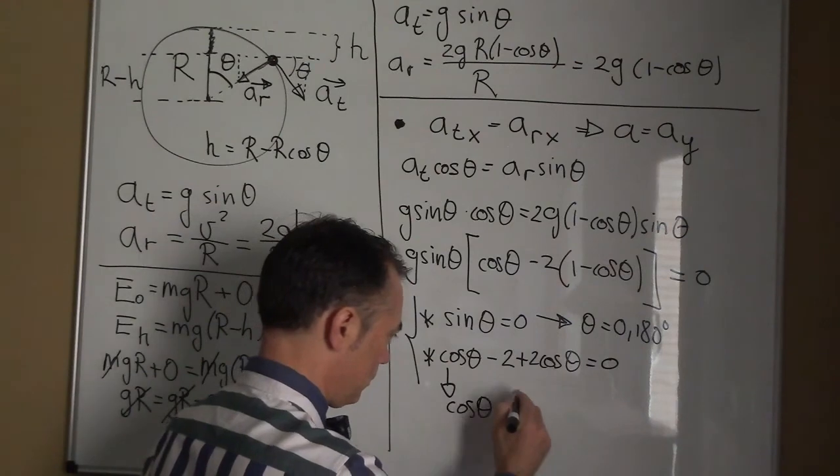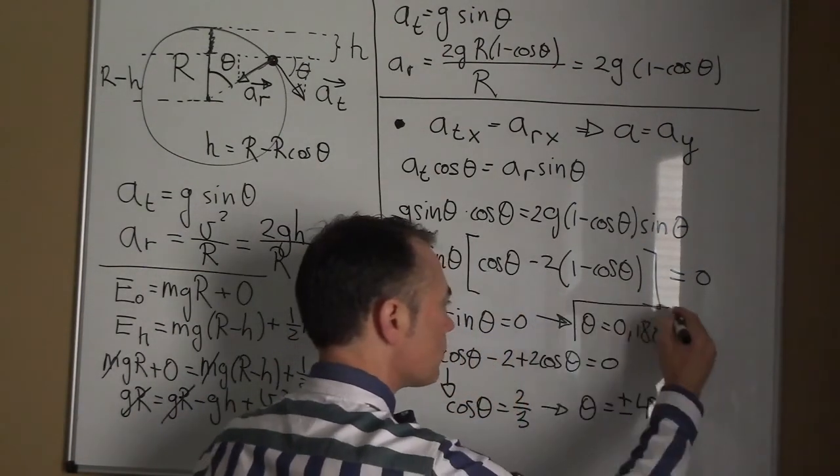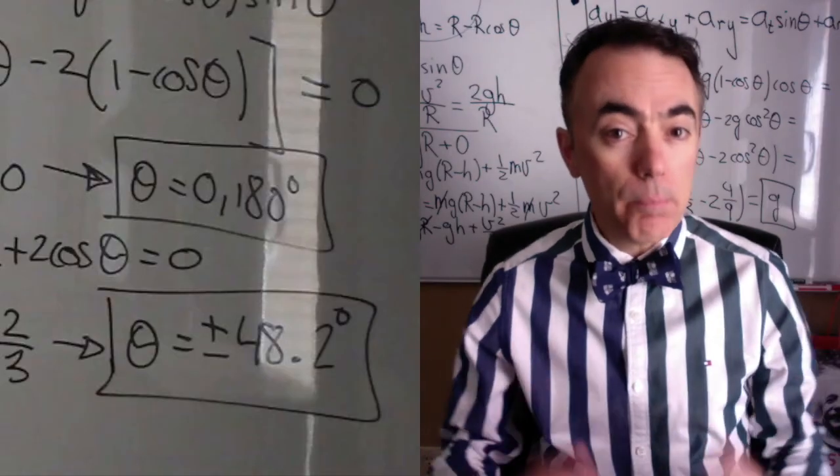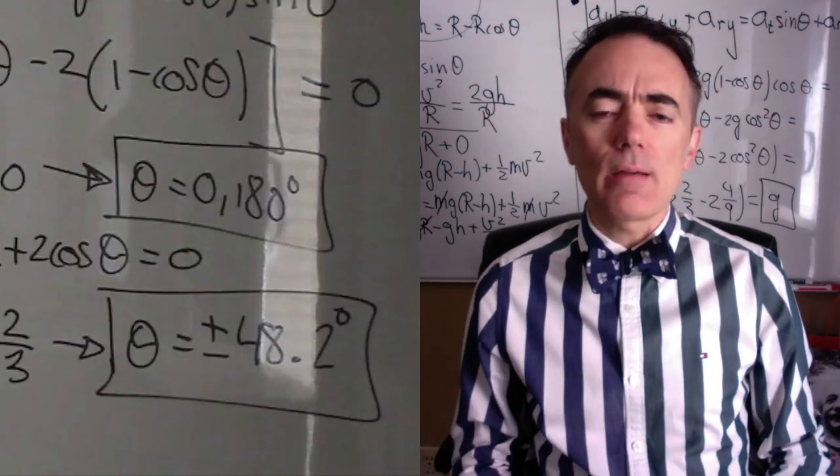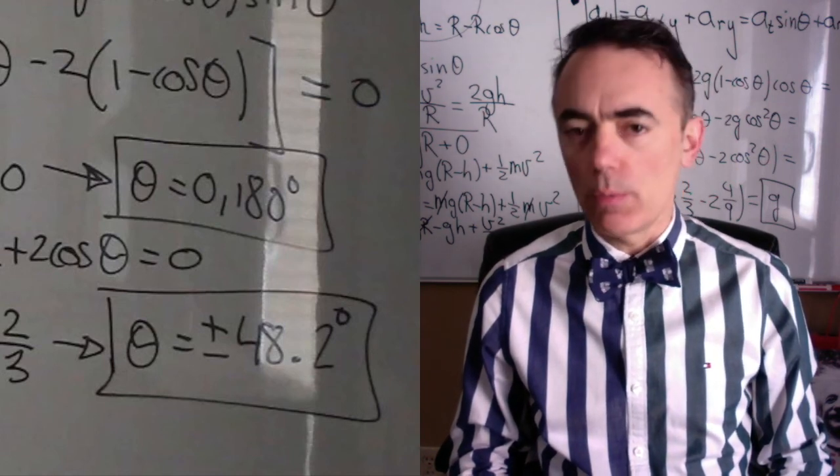We find that this happens for cosine theta equals zero and for cosine theta equals two-thirds. The first condition corresponds to the top and the bottom of the hoop. The second condition corresponds to theta equals plus and minus 48.2 degrees.